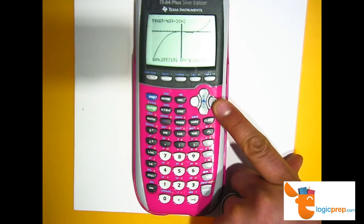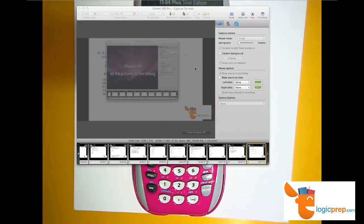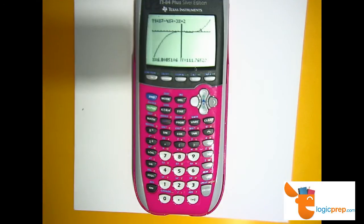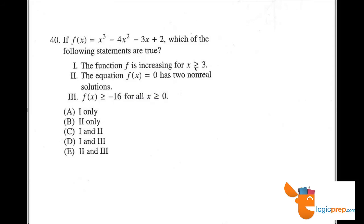Right now, y is getting greater, greater, and y continues to get greater. So which of the following statements are true? The function f is increasing for x is greater than or equal to 3. That's true. We just saw that that went up.